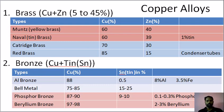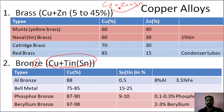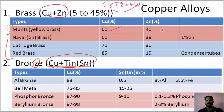First, brass. There are more types of that — four types. First, muds metal. If you use yellow or muds metal, you use copper 60 and zinc 40.